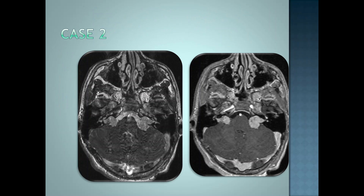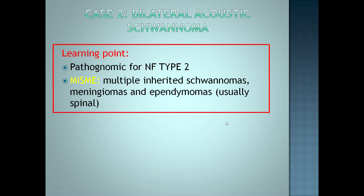Second case: these are bilateral ice cream-shaped lesions in the cistern extending into the internal auditory canal with enhancement. So these are bilateral vestibular schwannomas, diagnostic for NF type 2. NF type 2 has multiple inherited schwannomas, meningiomas, and spinal ependymomas.